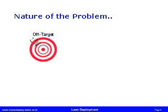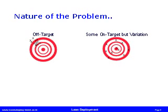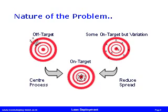The first target shows a nice tight cluster of hits, but the process centre is way off. The next target shows greater variability, but at least it hits the target dead centre every now and then. The final target here is nicely centred and the variation is low. This is the best result and what Six Sigma tries to achieve.